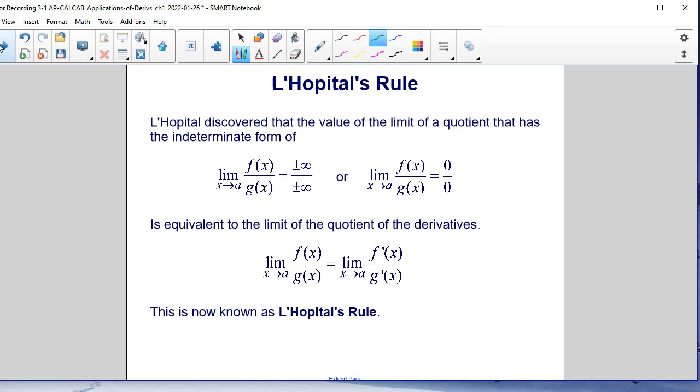Now L'Hopital's rule says that if you have a function such as f of x over g of x, and as x approaches a, the result is going to be plus or minus infinity over plus or minus infinity, or same limit as x approaches a, f of x over g of x, we end up with 0 over 0.